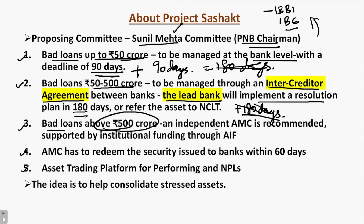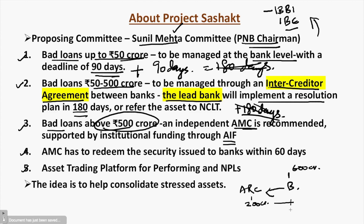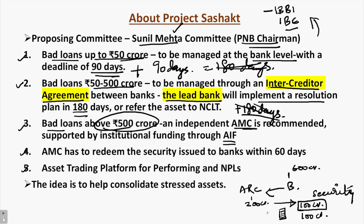The third prong covers bad loans above 500 crores. An independent asset management company (AMC) is recommended, supported by institutional funding through an alternative investment fund (AIF). For example: a bank has a non-performing loan of 600 crores. An asset reconstruction company (ARC) offers to buy it for 200 crores — paying 100 crores in cash and issuing securities worth 100 crores. Project Sashakt says these securities issued by the ARC to the bank must be redeemed within 60 days, meaning the ARC must convert the securities into cash within 60 days.